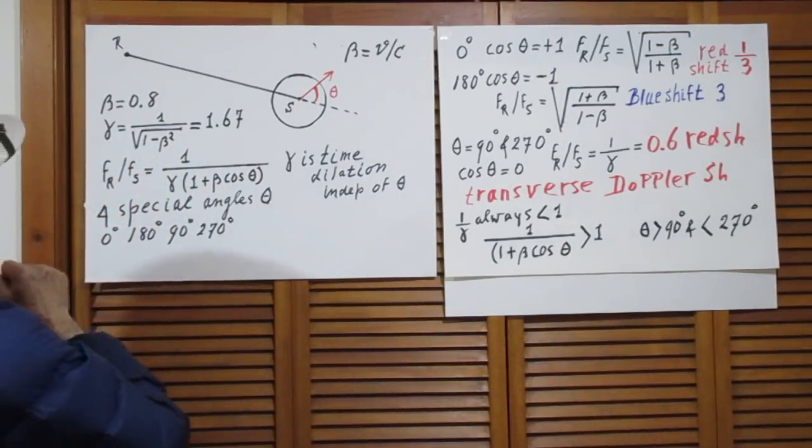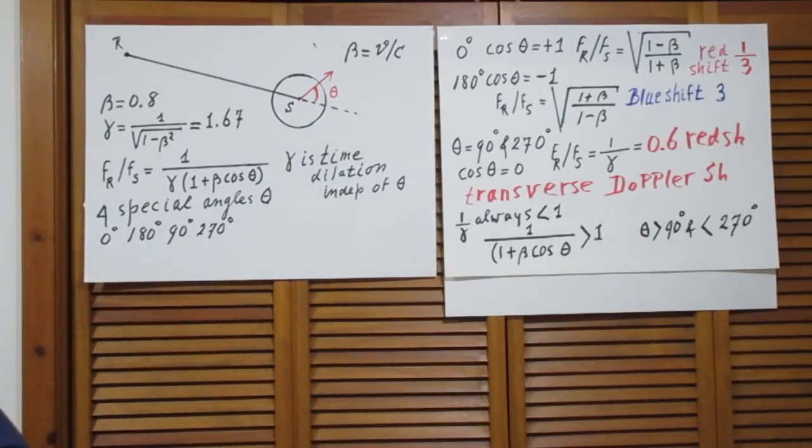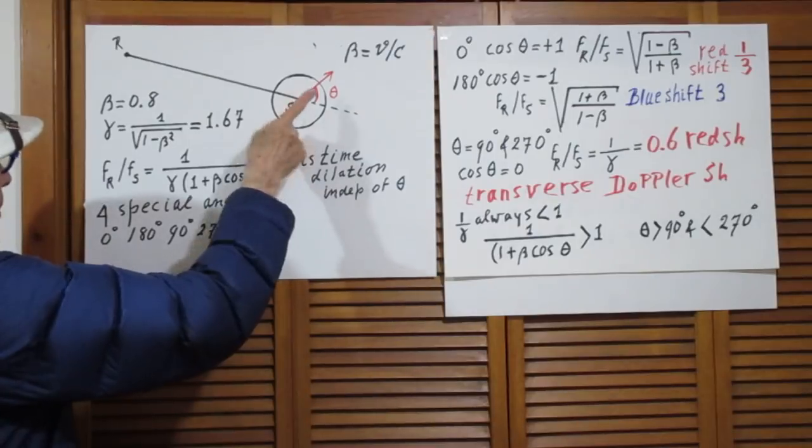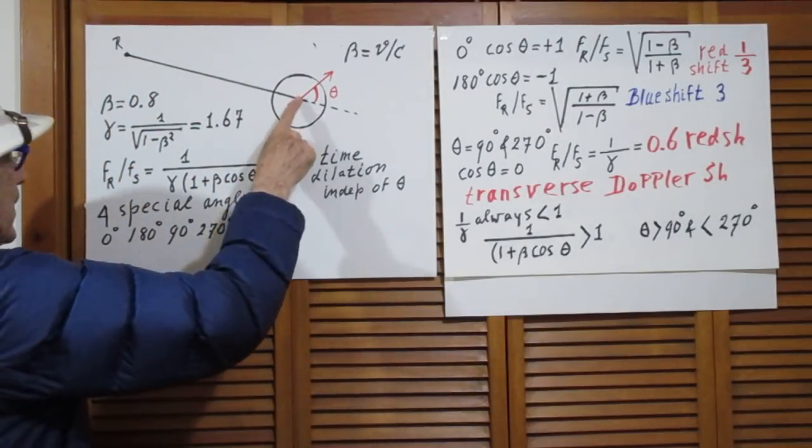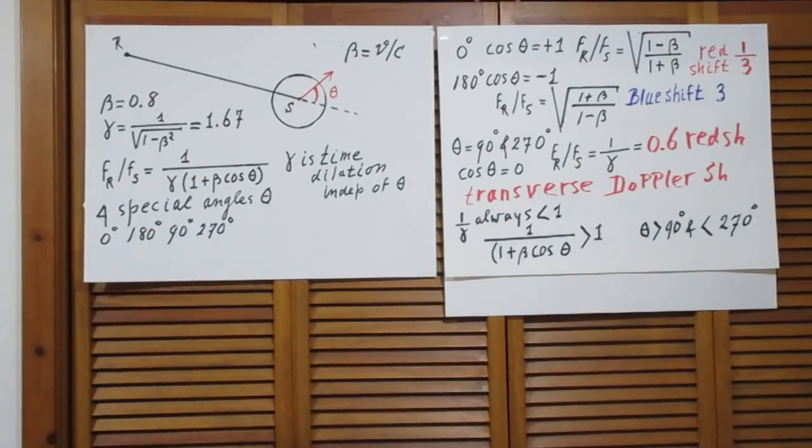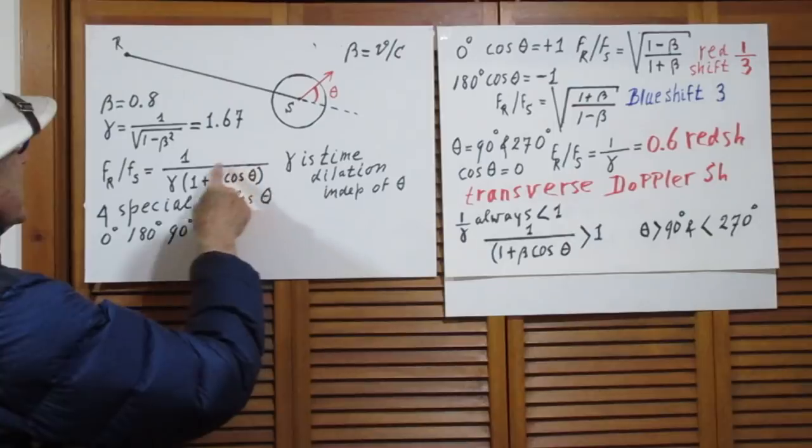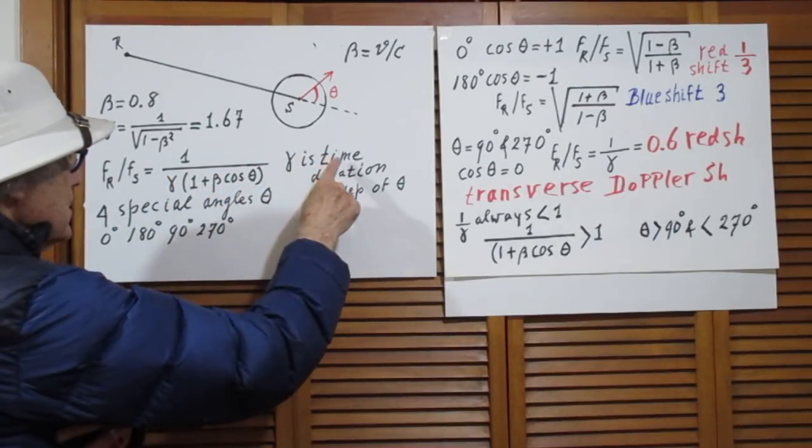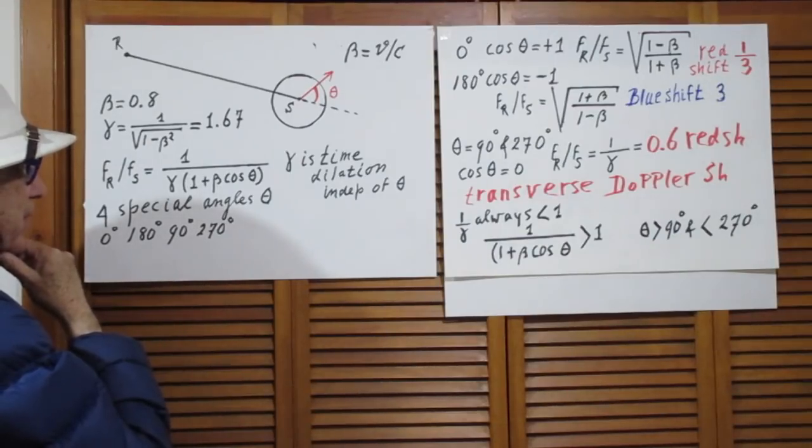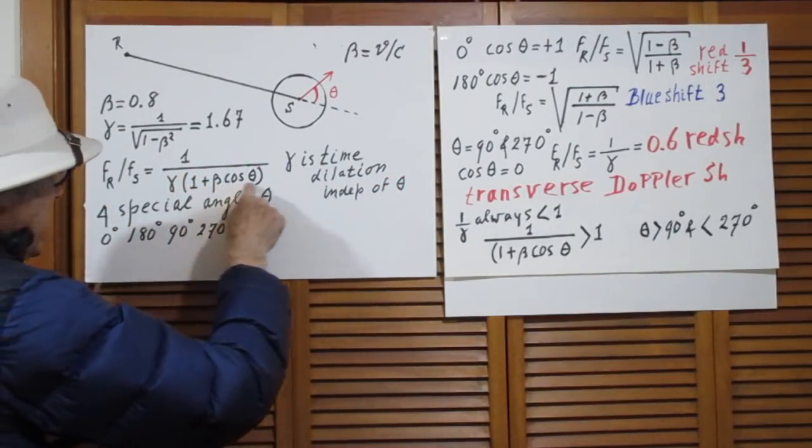The Lorentz contraction, one over the square root of one minus beta squared, is 1.66666. Now the ratio of the frequency of this laser beam that you receive divided by the frequency that was transmitted by the source is given by this equation. It's called relativistic Doppler shift. It has two components: it has this gamma and it has this component. Gamma is the time dilation factor which is essential in Einstein's theory of special relativity, and I want to stress that gamma is independent of theta. It is only this part that depends on theta.